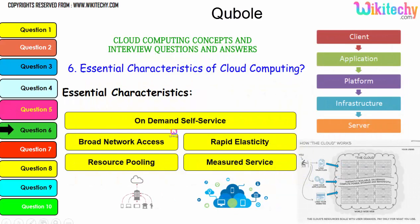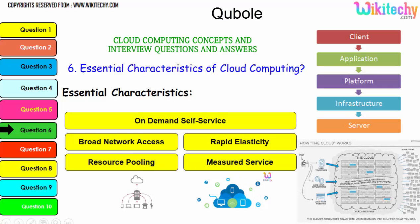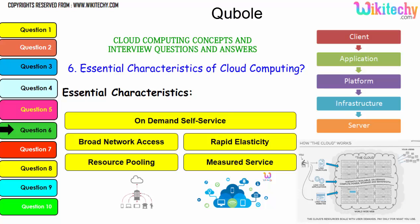Additional essential characteristics include: on-demand self-service — you can get service on demand; broad network access — a very wide network is available; rapid elasticity — you can increase or reduce capacity quickly; resource pooling — you can allocate as many resources as you want; and measured service — a pay-as-you-go model where you pay only for what you use. These are the essential characteristics of cloud computing.